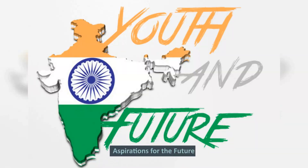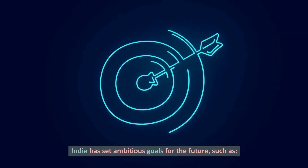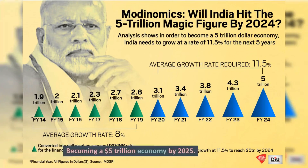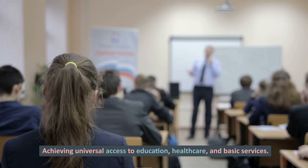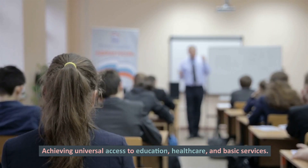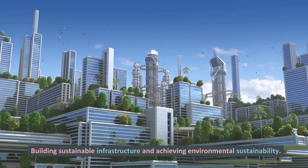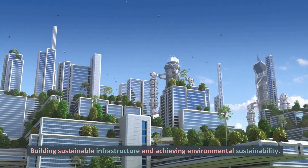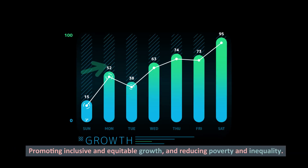Aspirations for the Future: India has set ambitious goals, such as becoming a $5 trillion economy by 2025, achieving universal access to education, healthcare, and basic services, building sustainable infrastructure and achieving environmental sustainability, and promoting inclusive and equitable growth while reducing poverty and inequality.